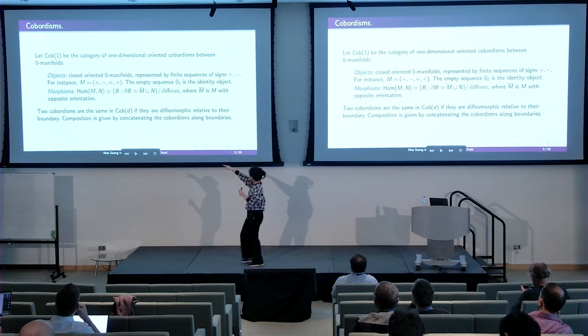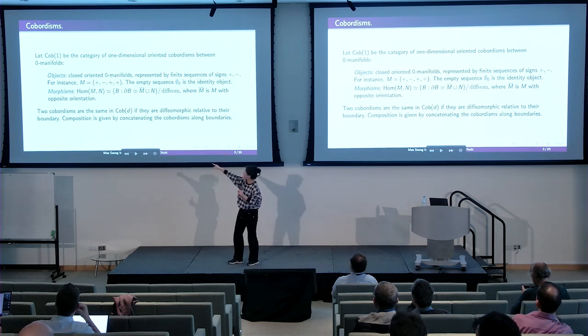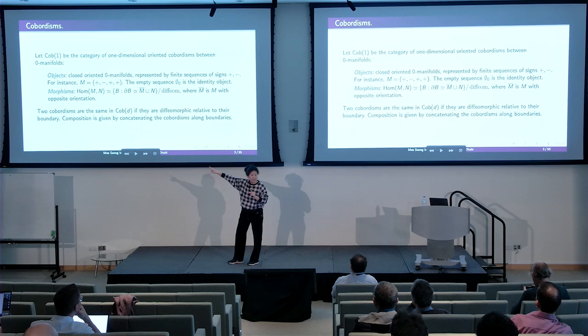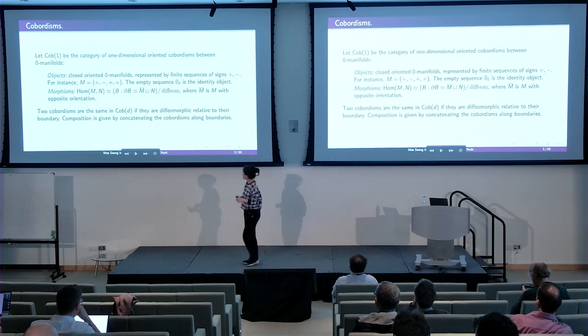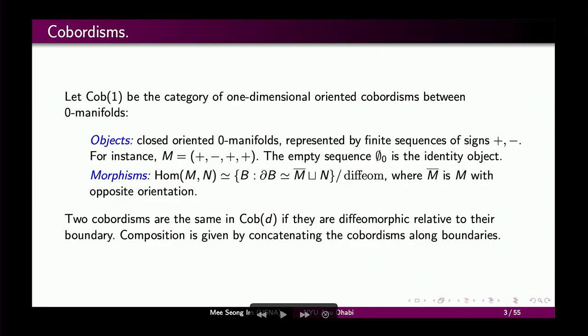For positive orientation we write plus signs, and for negative orientation we write minus signs. So an object in this category cob one is of the form plus, minus, plus, plus. The empty sequence is the identity object in this category. A morphism from M to N is given by a cobordism B where the boundary of B is given by M-bar disjoint union N, modulo diffeomorphism, where M-bar is M with opposite orientation.